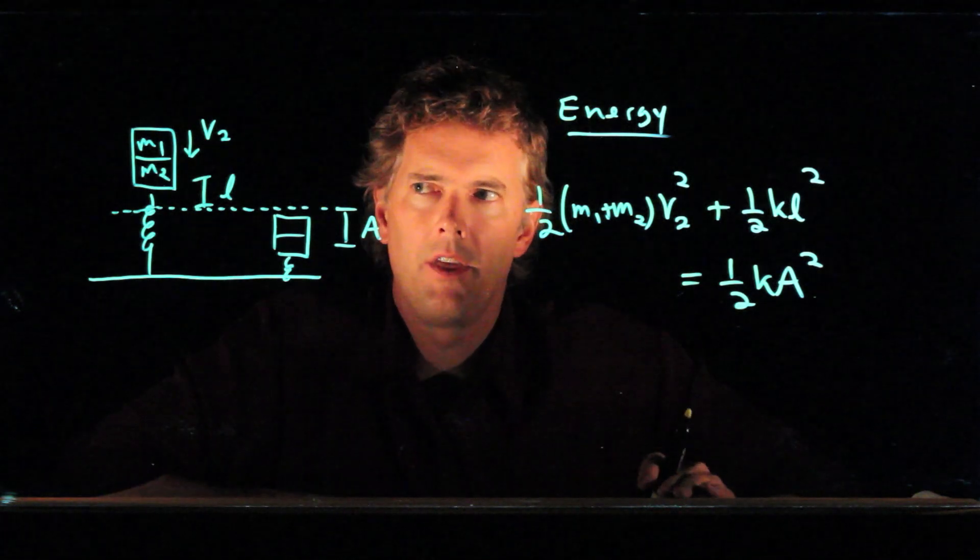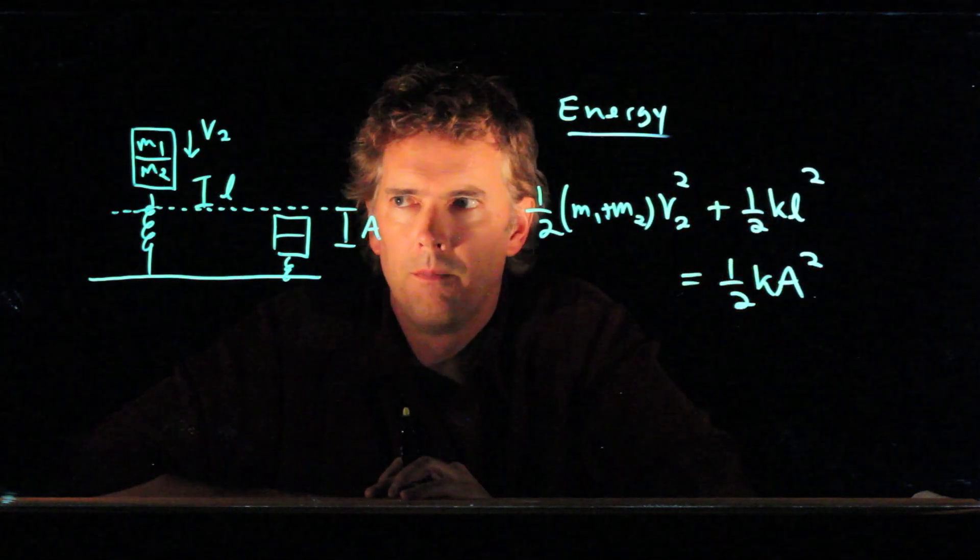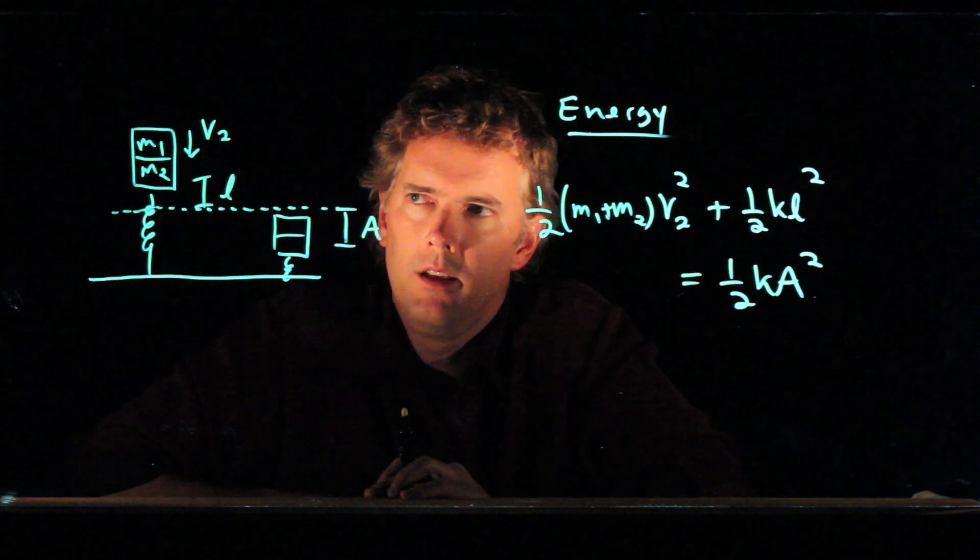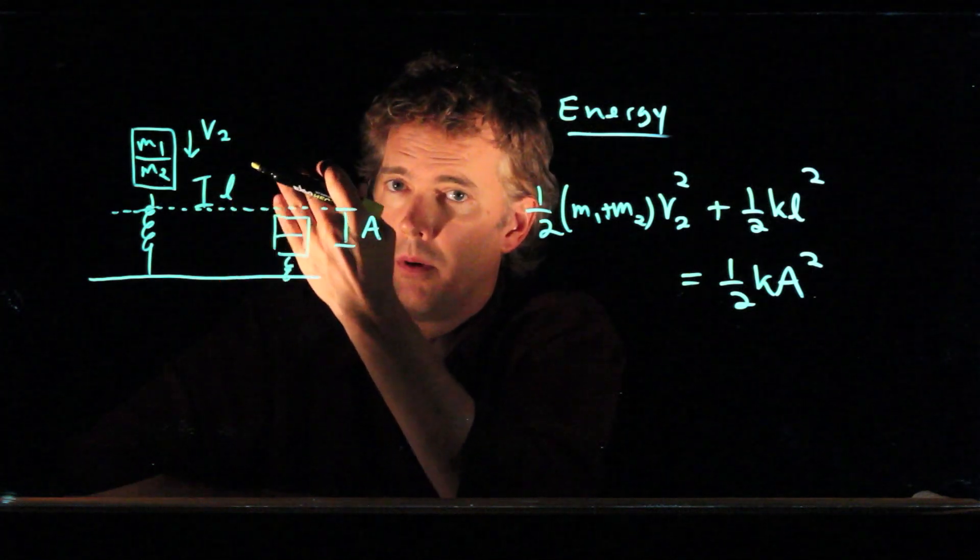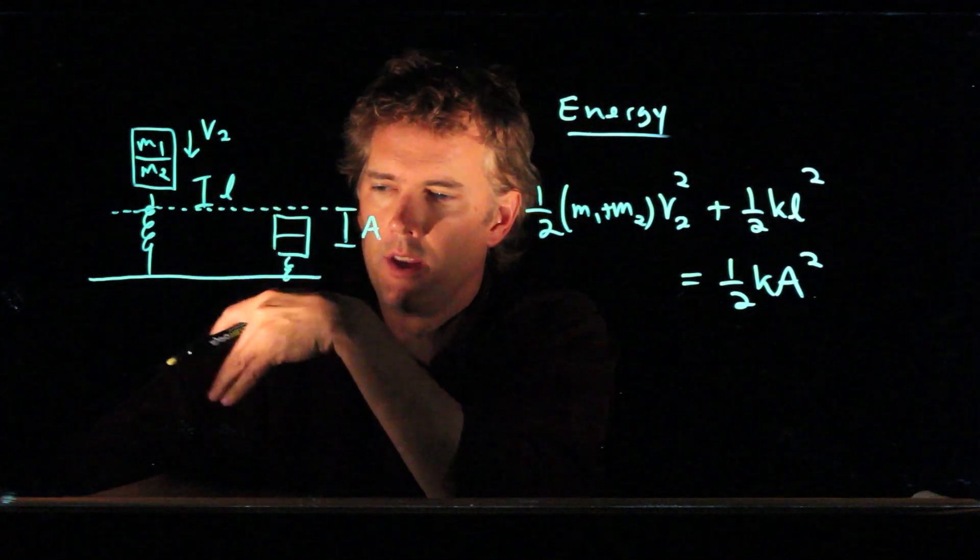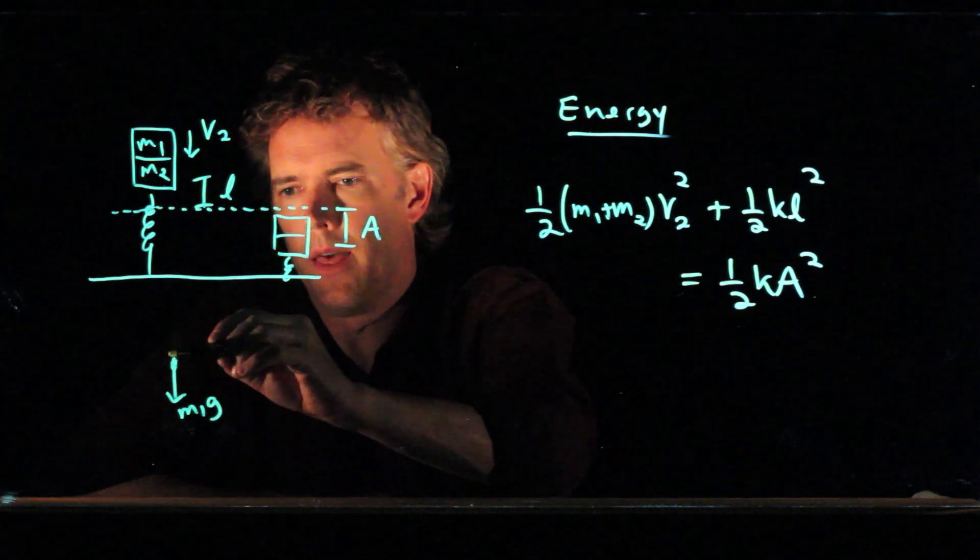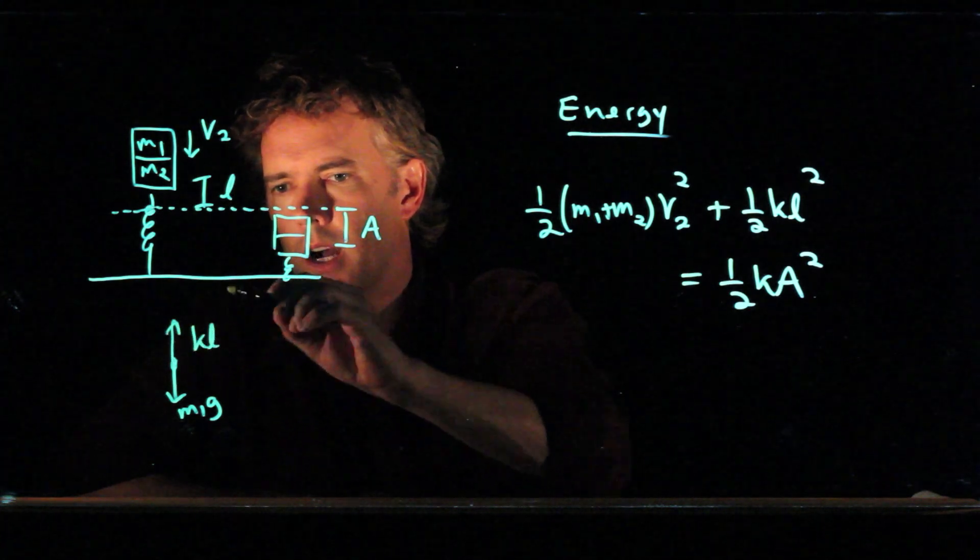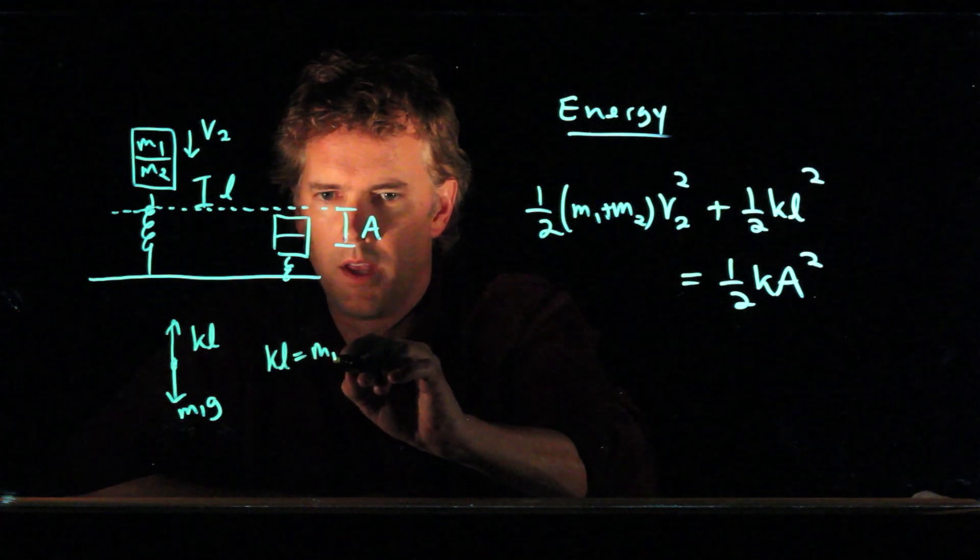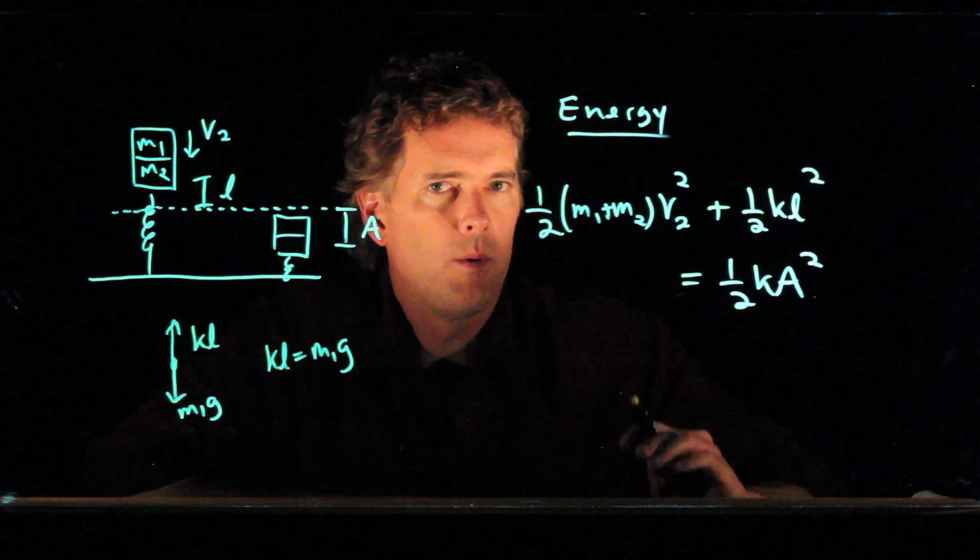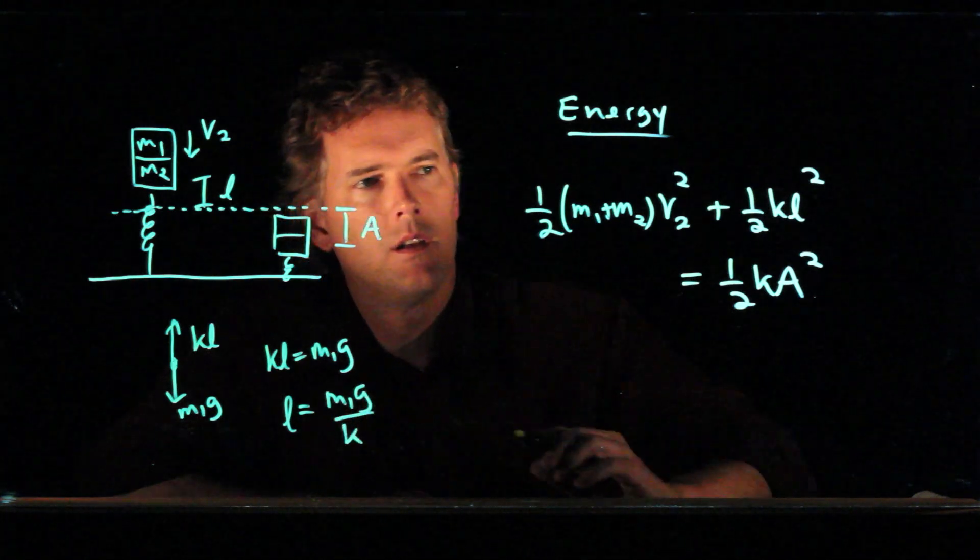We're almost there, but we need to know something about this new equilibrium position, L. How do I figure out what that L is? By adding this mass M1, we've added a little bit more force down due to gravity. We have M1 G going down, and the spring is pushing up with K L. So we get K L is equal to M1 G. Now we can solve this for L and we can stick it into our equation.